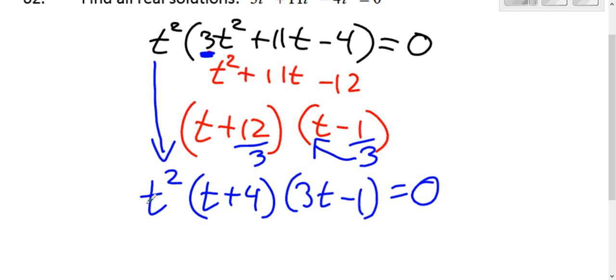So, to find the real solutions, you set it up. t squared equals 0 means t equals 0. t plus 4 equals 0 means t equals negative 4.